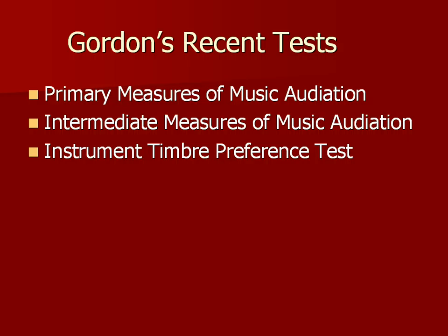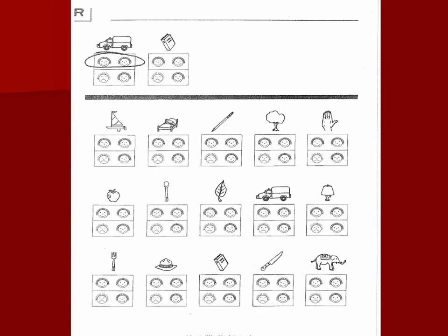Gordon defines audiation as a kind of short-term tonal memory — if you hear two pieces, can you tell that they're the same or different? This is the scoring sheet for the rhythm portion of the Primary Measures of Music Audiation, the PMMA. Because this was administered to young children, rather than numbering the responses they use icons — there's the truck response and the book response. I'm going to play some examples of this so you can get a feel for what it's like.